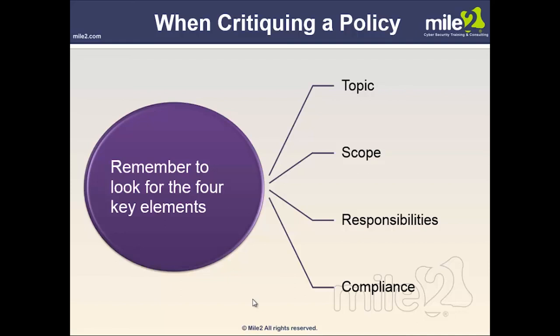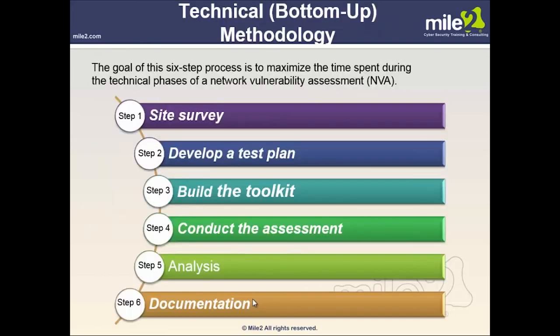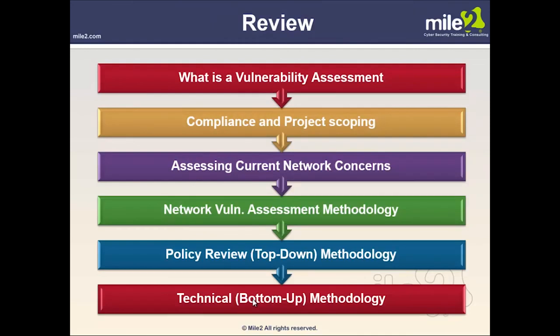The bottom-up technical methodology uses a six-step process to maximize time spent during technical phases of the network vulnerability assessment. Step one: site survey — walk around, see what's going on. Step two: develop a test plan. Step three: build the toolkit. Step four: conduct the assessment. Step five: perform the analysis. Step six: document everything. This concludes the overview covering vulnerability assessment, compliance and project scoping, network concerns, VA methodologies, and both the top-down policy review and the bottom-up technical methodology.